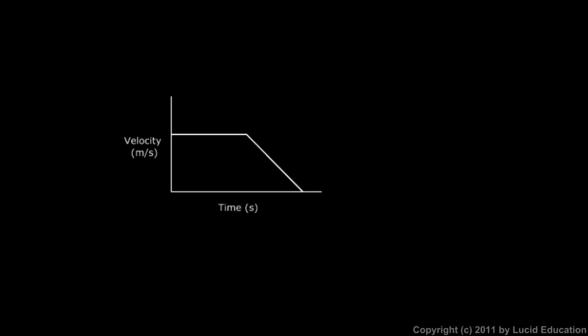Well, in this first piece, as time goes on, the velocity stays right at this value. In other words, at this time, that corresponds to that point on the graph, which is that velocity. At a later time, it corresponds to that point on the graph, which is still that velocity, the same velocity.